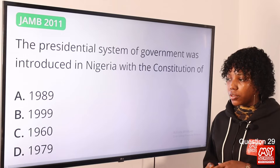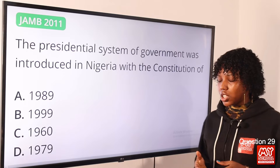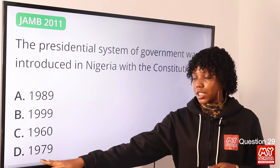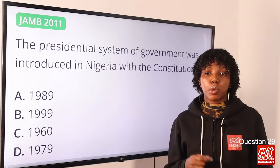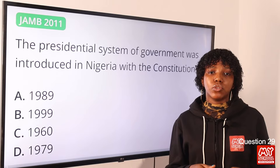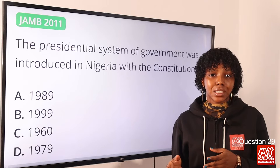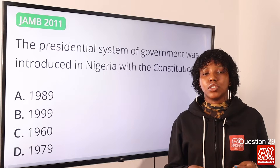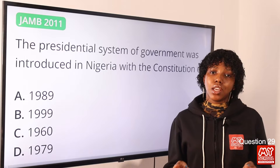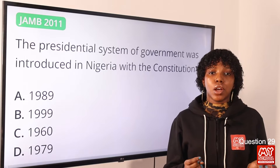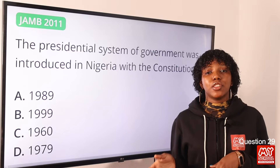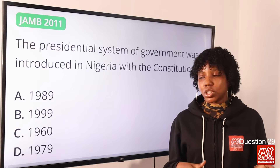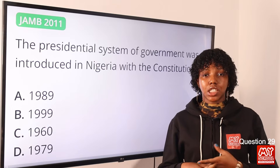Question 29: The presidential system of government was introduced in Nigeria with the constitution of — the answer is option D, 1979. The second republican government of 1979 adopted an executive presidential system where the president is both the head of state and head of government. The answer is option D.